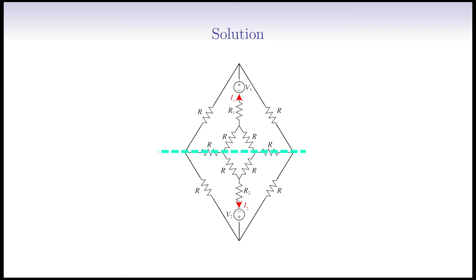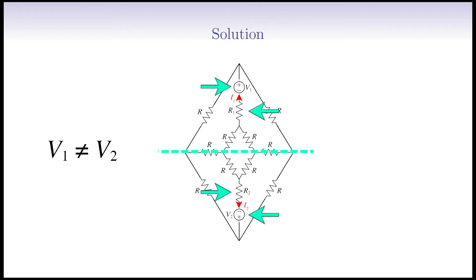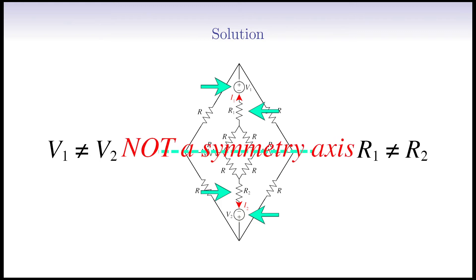Be cautious about the horizontal line passing through the center of the circuit. This line is not an axis of symmetry for the circuit, since on top of it we have a voltage source of V1 and a resistor of R1, and under the line we have a voltage source of V2 and a resistor of R2. V1 and V2 are not necessarily equal. R1 and R2 are not necessarily equal too. So the circuit is not symmetric with respect to the horizontal line.